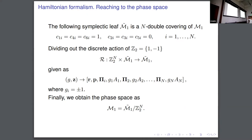The symplectic leaf that you have to choose is this one, which describes the set of configurations which is a level set of the Casimirs. You still need to remove the rotational symmetry. And that's the reason that you have to divide out the SO(3) action. So by fixing the Casimirs and quotienting out the discrete action, we finally arrive to the phase-space.